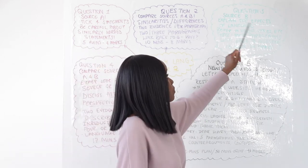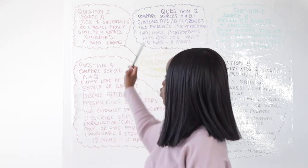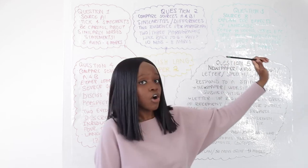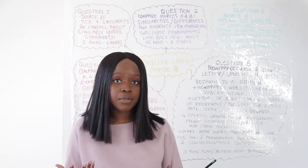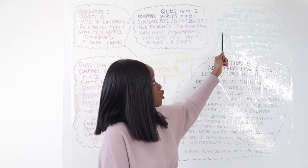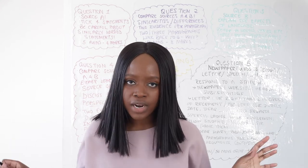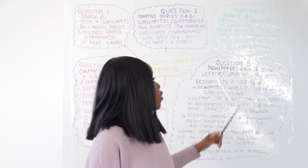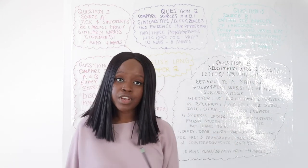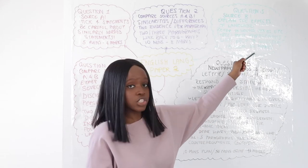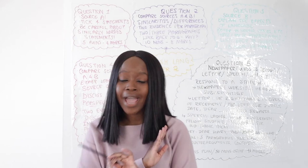Question 3 asks you to focus only on source B, the Victorian extract. You tend to be asked to explain the effects of a particular choice of language, so this is where you choose examples and are expected to refer to things like nouns, verbs, adjectives, adverbs, similes, and so on. Check out my terminology video where I go over all relevant terminology. You should write a maximum of three or four paragraphs, finding three different pieces of evidence and including them using the PEE method. Given this question is worth 12 marks, spend 13 minutes in total.